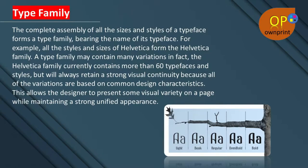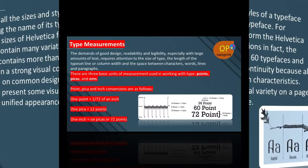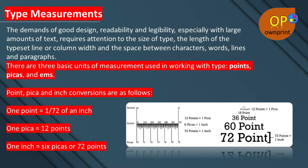This allows the designer to present some visual variety on a page while maintaining a strong, unified appearance. The next topic is type measurements. The demand for good design, readability, and legibility — especially with a large amount of text — requires attention to the size of type, the length of the typeset column width, and the space between characters, words, lines, and paragraphs. There are three basic units of measurement used in working with type: points, picas, and ems.